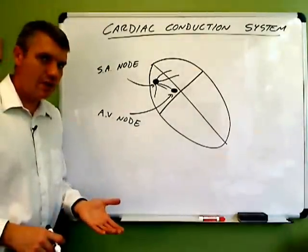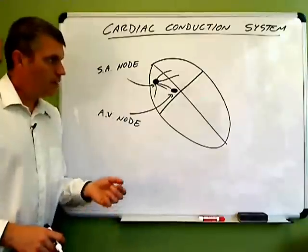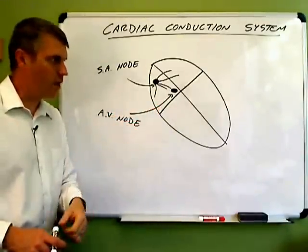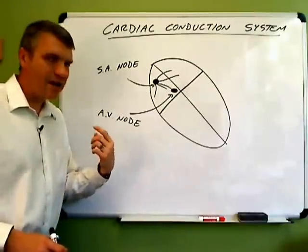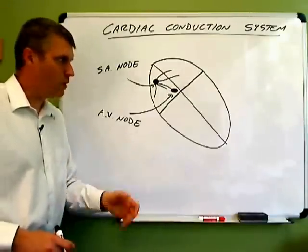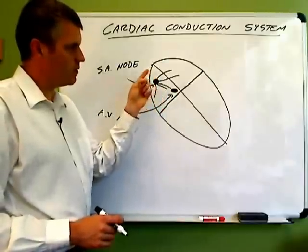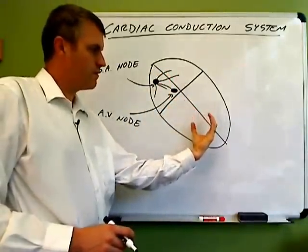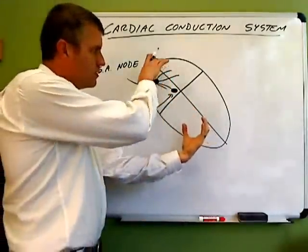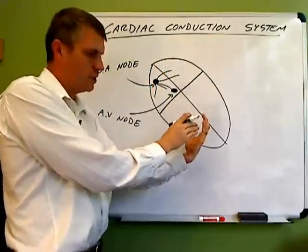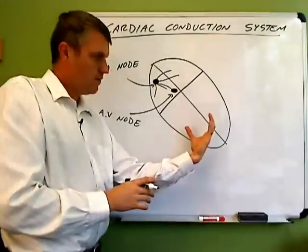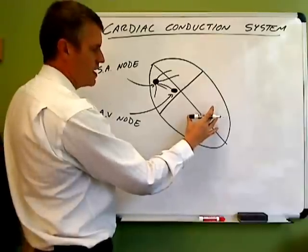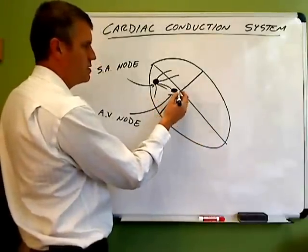When that depolarization reaches the atrioventricular node, the AV node sends it on through, but it slows it down a bit, makes it kind of pause. It conducts that signal a little bit more slowly. And the reason for that is so that we don't have the atria contracting and then at the same time the ventricles contracting. The ventricles are filling at this point and the job of the atria, when it contracts, is to push a little more blood into the ventricles to get the ventricles as full as they can be before the next contraction. So we don't want the ventricles contracting at the same time and that's why the AV node needs to slow it down.